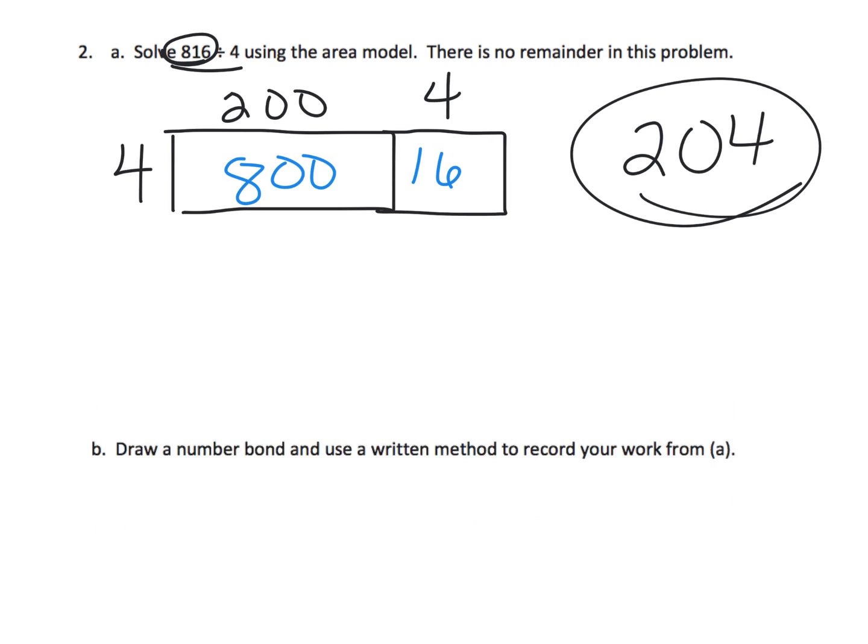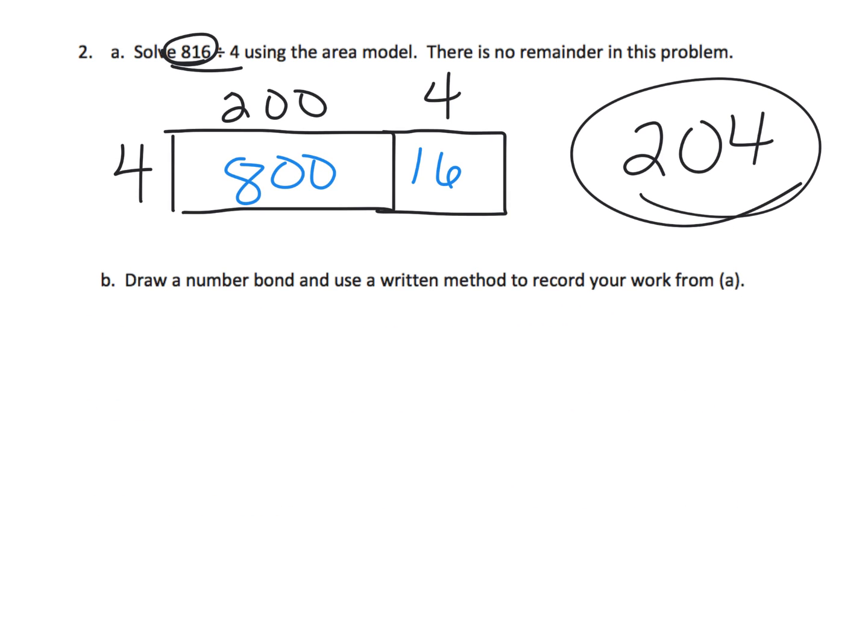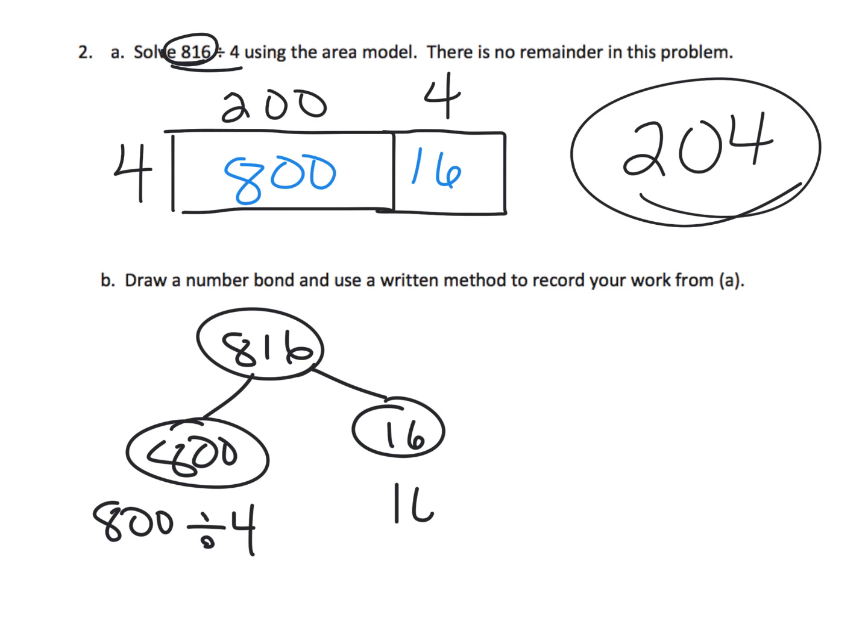Now down here it says we're supposed to draw a number bond to represent that. So we're going to take our 816 and we're going to split it up into 800 and 16. And here we've got 800 divided by 4 and here we've got 16 divided by 4, which gives us 204. And there's our number bond.